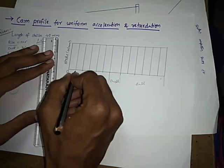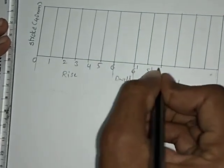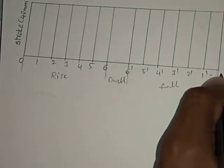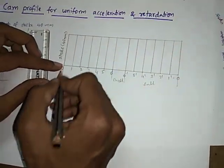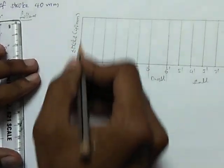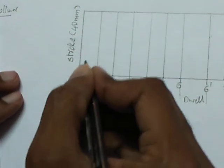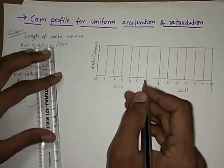Give the numbering on the x-axis: 0, 1, 2, 3, 4, 5, 6 for the rise, and then 6-dash, 5-dash, 4-dash, 3-dash, 2-dash, 1-dash, 0 for the fall. Also divide the stroke on the y-axis into the same number of equal parts — that is six. Measure the total distance and divide by six to make six equal parts, because you have done the rise and fall in six equal parts. Then just draw the horizontal lines across.